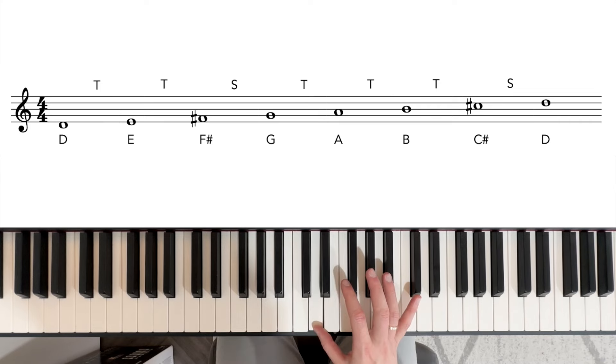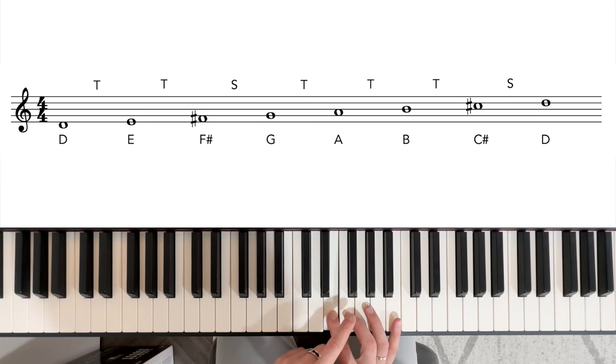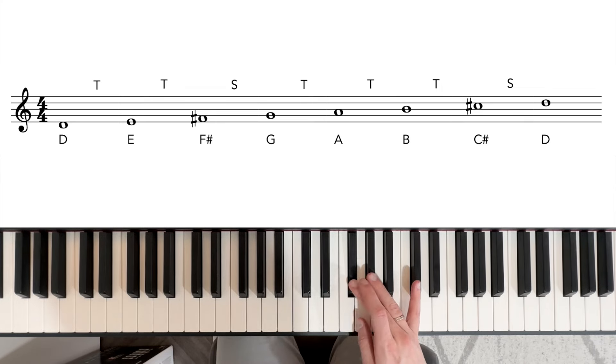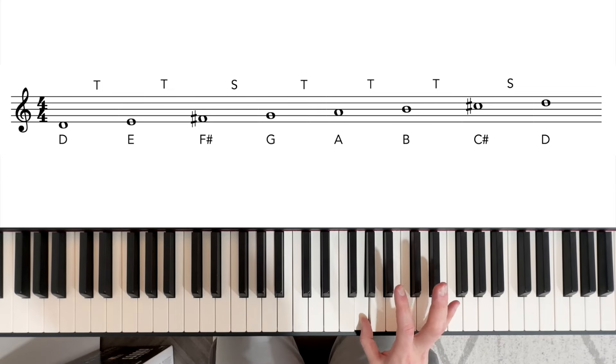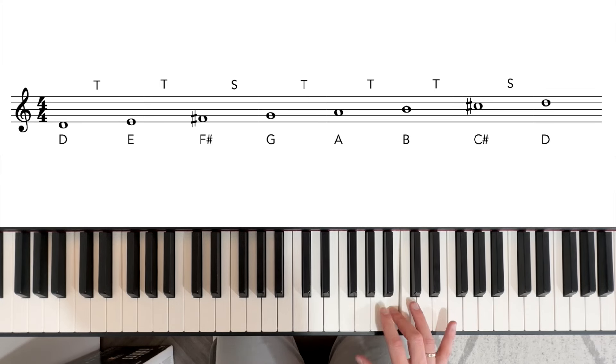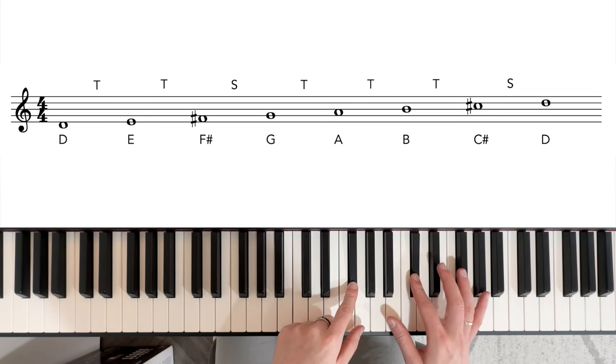So we start on D, we need a tone, so E is a tone. Then we need another tone, but F is going to be a semitone, so we need to sharpen the F, and now we have a tone between E and F sharp. Then we need a semitone, so F sharp and G is a semitone. The next note has to be a tone, so A, another tone, B, and we need another tone. Again, this is not going to work because there's no black key, so we need to sharpen the C, and it becomes C sharp, and then we need another semitone, which is D.